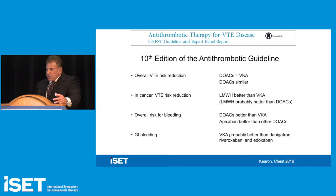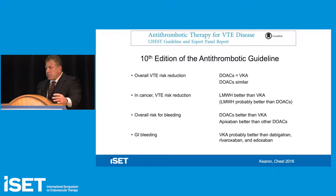For overall venous thromboembolic risk reduction, DOACs at least equal vitamin K antagonists, and they're much easier to administer. For cancer, it has been low molecular weight heparin over vitamin K inhibition, but DOACs are moving into this realm and will probably replace LMWH for cancer patients. As far as bleeding risk, DOACs are better than vitamin K inhibition — apixaban is probably the best — though for GI bleeding, vitamin K antagonists are still better than the Factor II or X inhibitors.